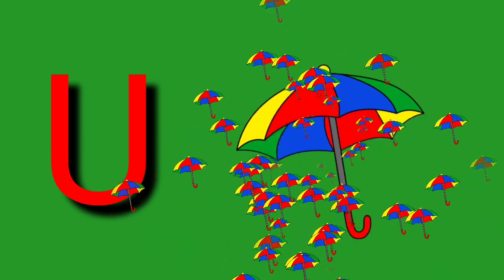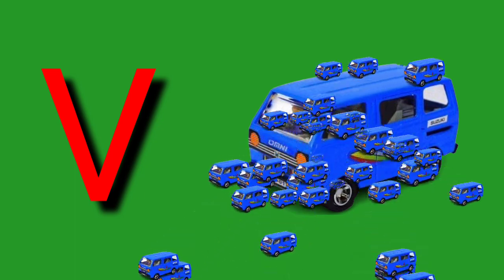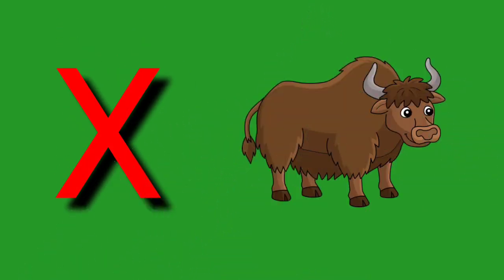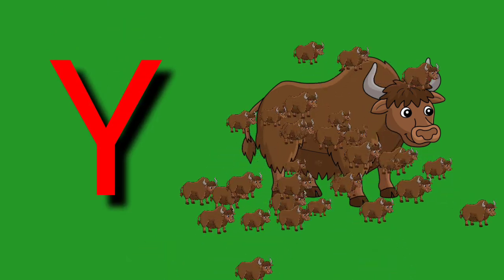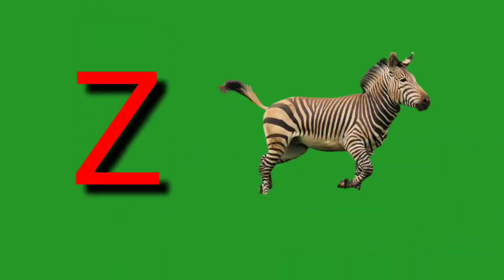U for umbrella. V for whale. W for watch. X for X mastery. Y for yak. Z for zebra.